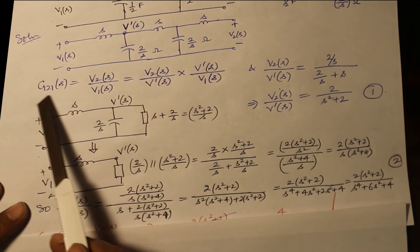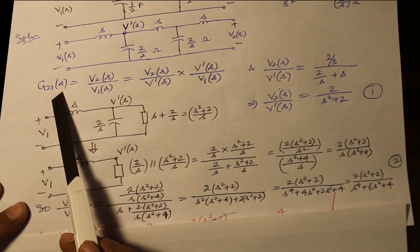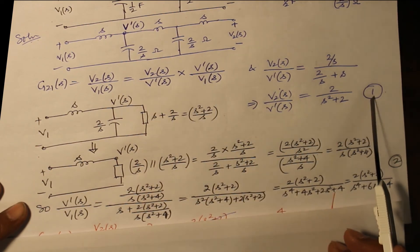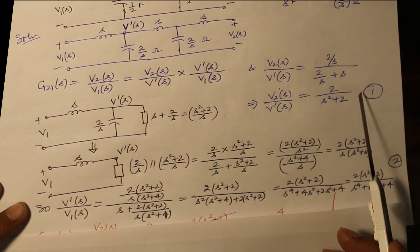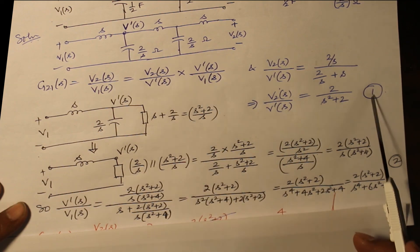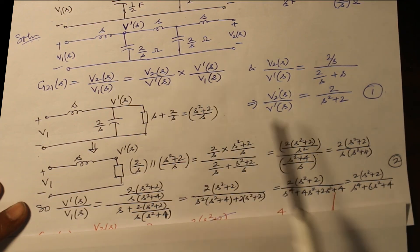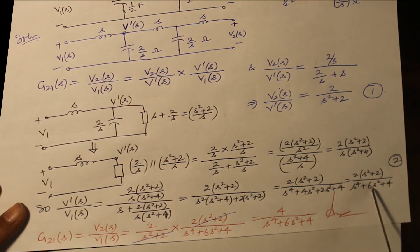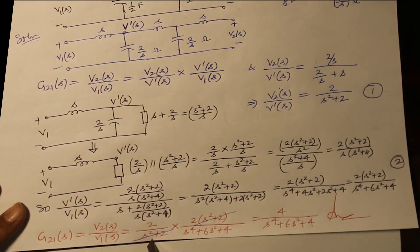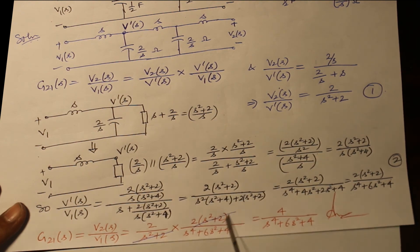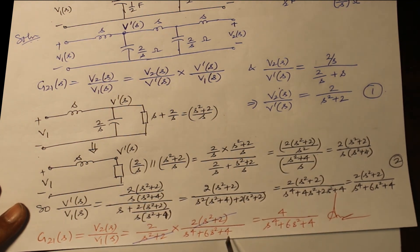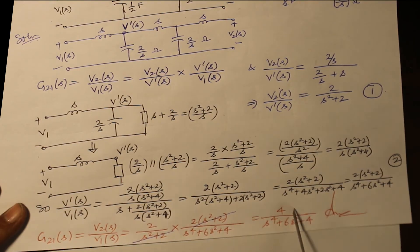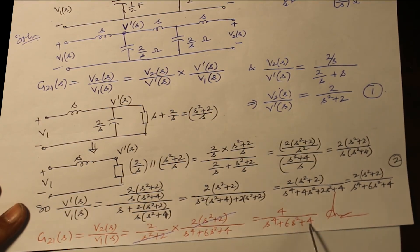G21S is the product of both ratios: V2S by V dash from equation 1, and V dash S over V1S from equation 2. Multiplying them: 2 over S squared plus 2, times 2 times S squared plus 2, over S to the 4 plus 6S squared plus 4. S squared plus 2 gets cancelled, giving the final answer: 4 over S to the 4 plus 6S squared plus 4.